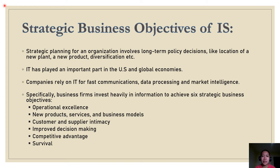Toyota and Walmart are prime examples of how companies use IS and technologies to separate themselves from their competitors. Toyota worked its way to the top of its industry with the help of its legendary information system, while Walmart is the most efficient retail store in the industry based largely on how it uses its information resources. Lastly, survival: business firms invest in IS because they are necessities of doing business — sometimes driven by industry-level changes. For instance, Citibank introduced the first ATM in the New York region in 1977 to attract customers through higher service levels.